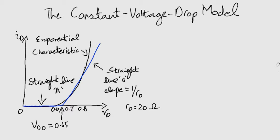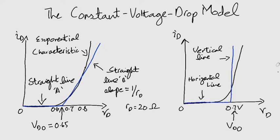What if we replace the straight line in this graph, having a gradient of 1 over rd, with a vertical line? This will give a poorer approximation but speed up our process even more. In some stages of design, we can use such a simple model, preferring it to more complex ones.